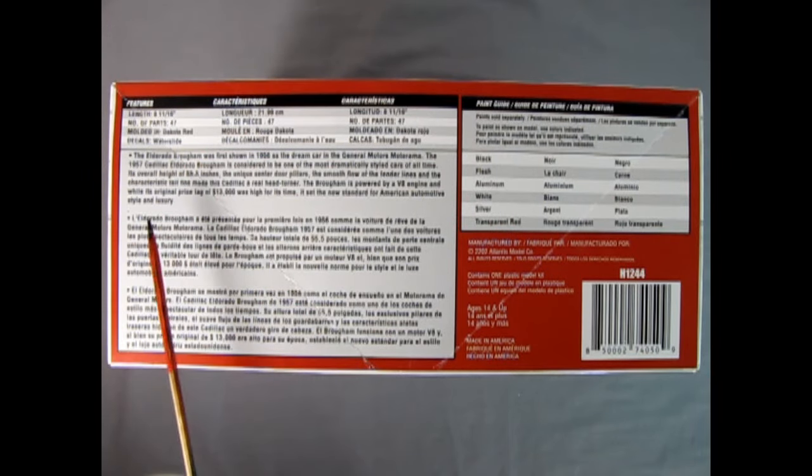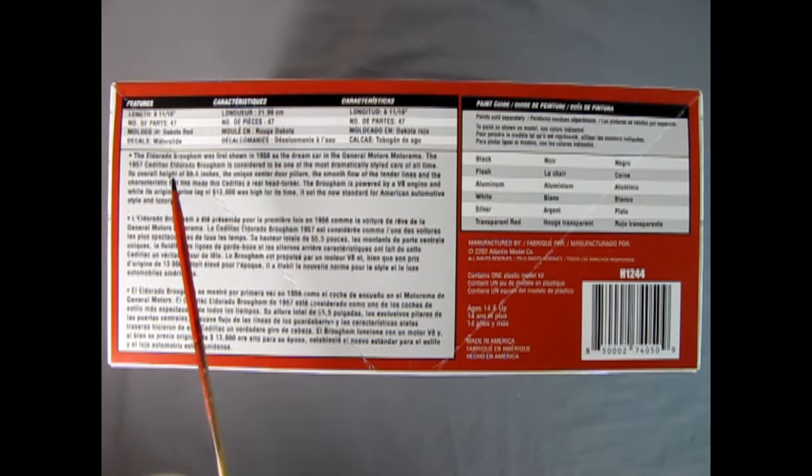The data sheet for this car is on this side of the box and we can see that it is 8 and 11/16 inches long. There are 48 parts molded in Dakota red with waterslide decals. I will print this in the description box down below so you can read exactly all the info on this '57 Cadillac. And over here we have our paint callout sheet as well and these are all the paints you're going to need in order to make this model kit look terrific.